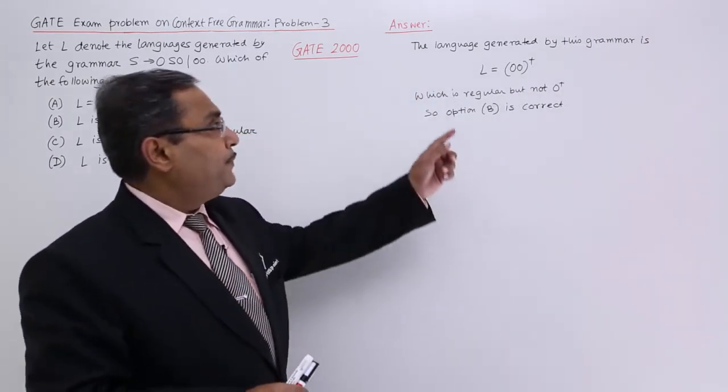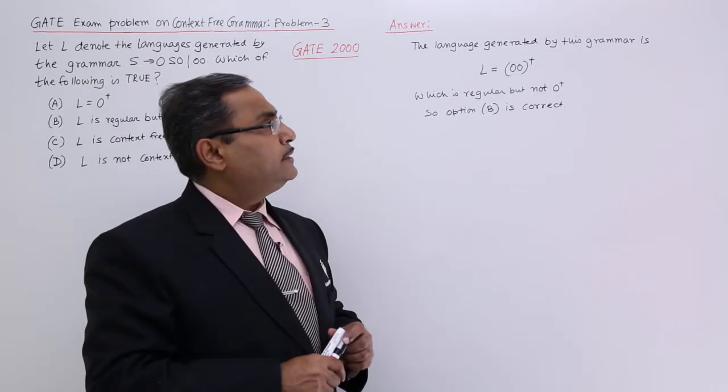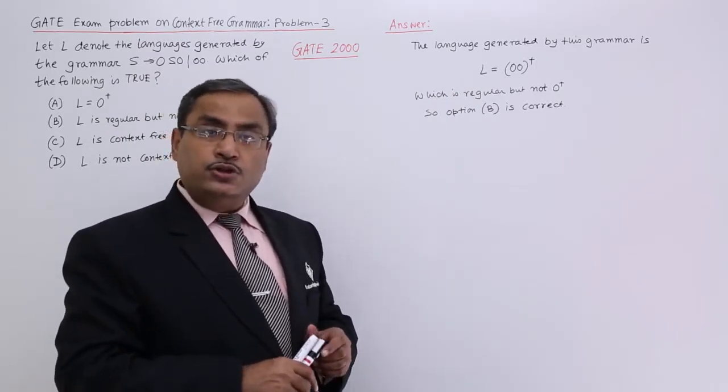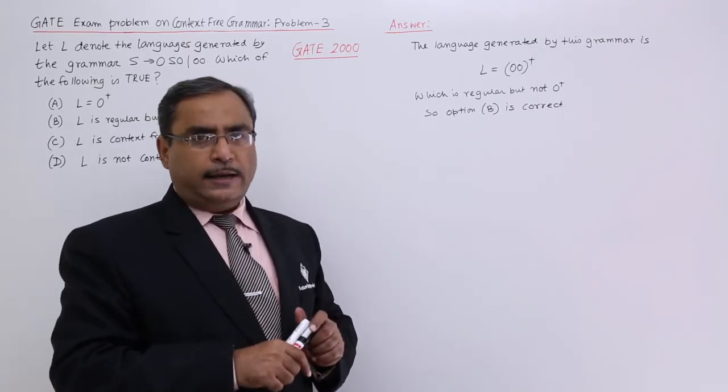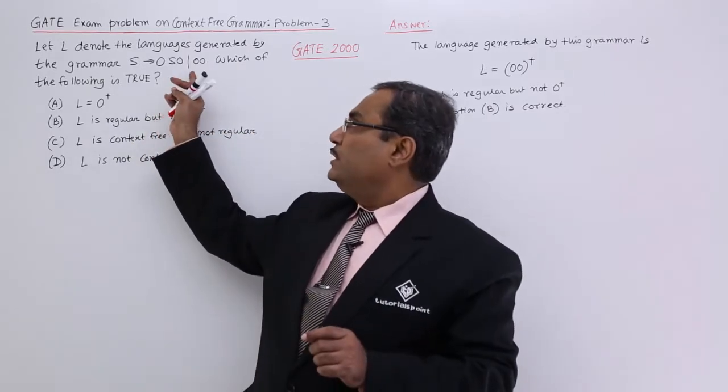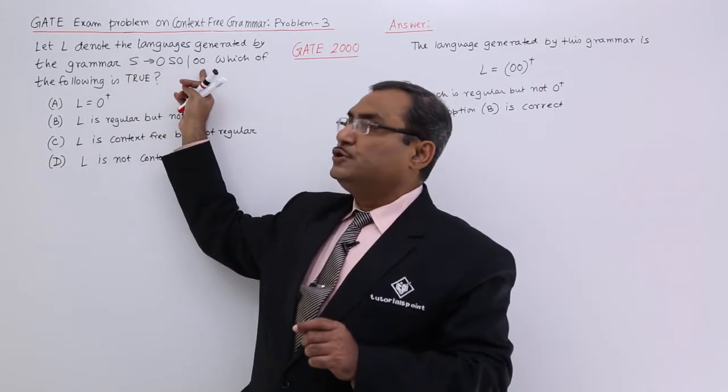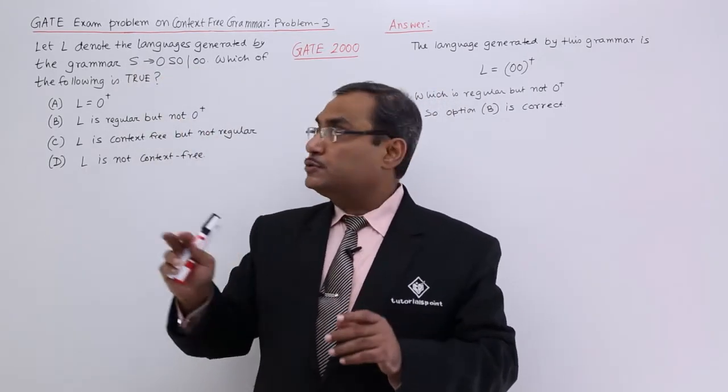That means the language generated by this grammar is (00)⁺ because always an even number of zeros will be coming. This is ensured if you produce S → 00 at first, then it will have two zeros.